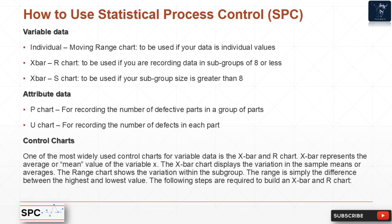One of the most widely used control charts for variable data is the X-bar and R chart. X-bar represents the average or mean value of the variable X. The X-bar chart displays the variation in the sample means or averages, while the range chart shows the variation within the subgroup. The range is simply the difference between the highest and lowest values. The following steps are required to build an X-bar and R chart.